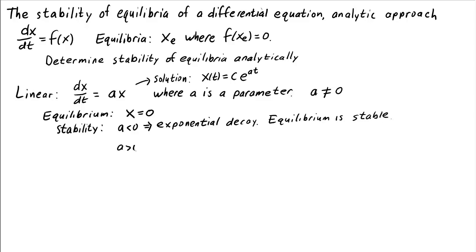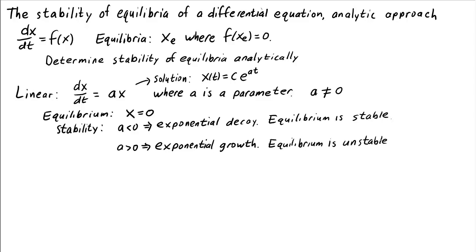On the other hand, if a is positive, we have exponential growth. If our initial condition isn't 0, then the solution x(t) will blow up, and the equilibrium is unstable. For the linear dynamical system dx/dt equals a times x, all that matters for the stability of the equilibrium 0 is the sign of the parameter a.